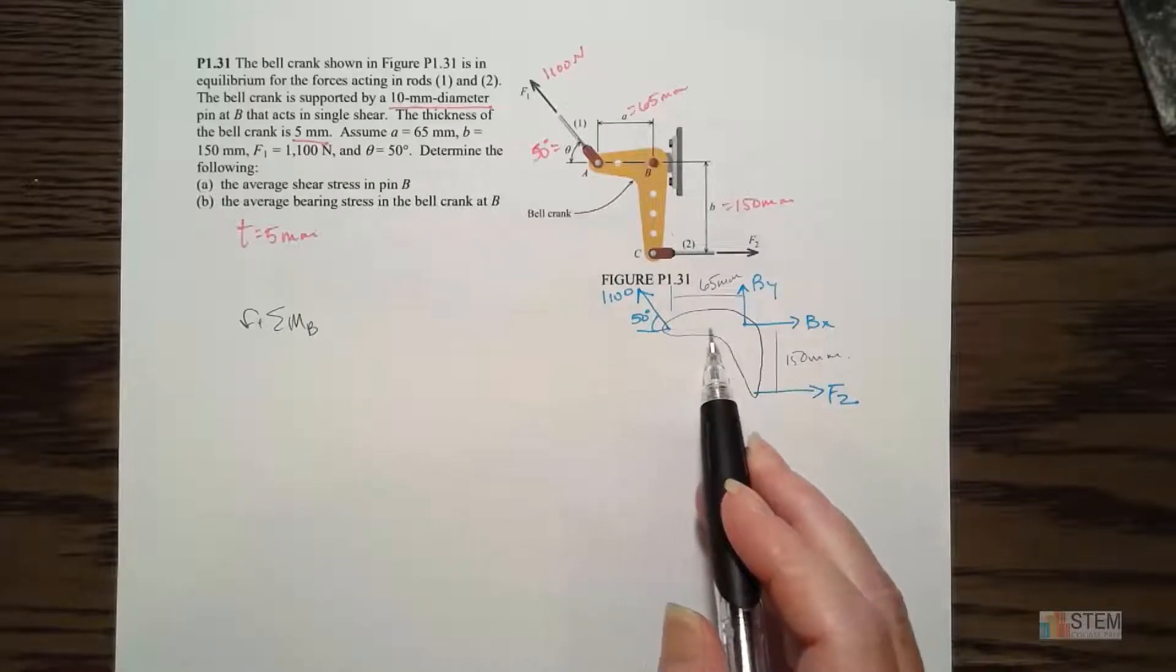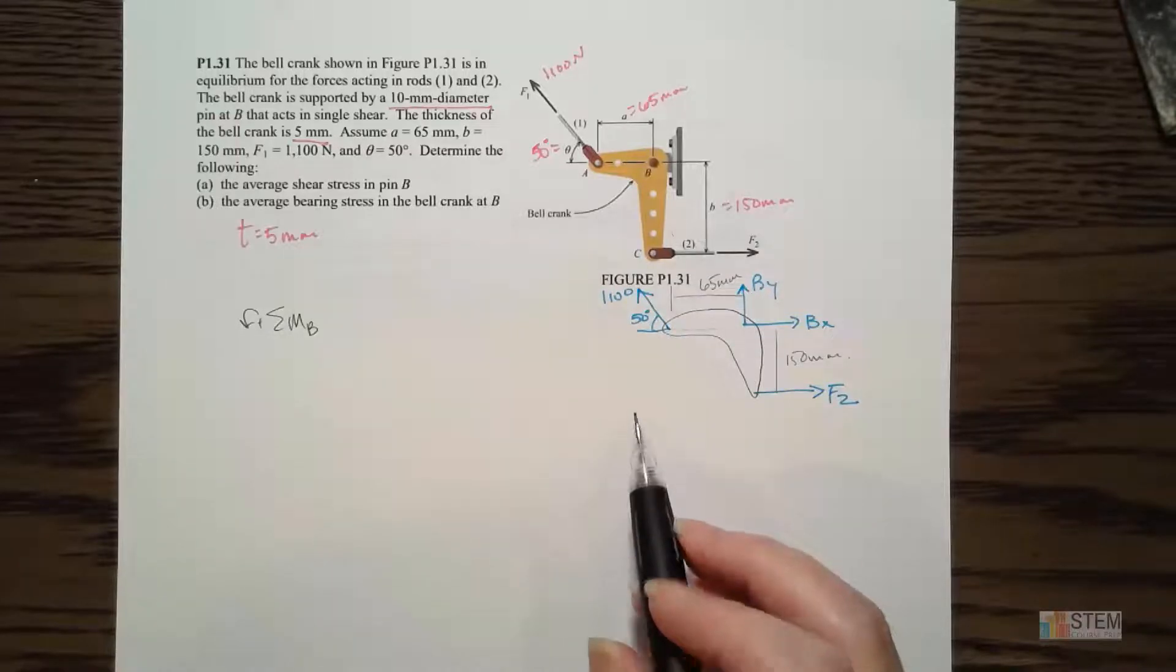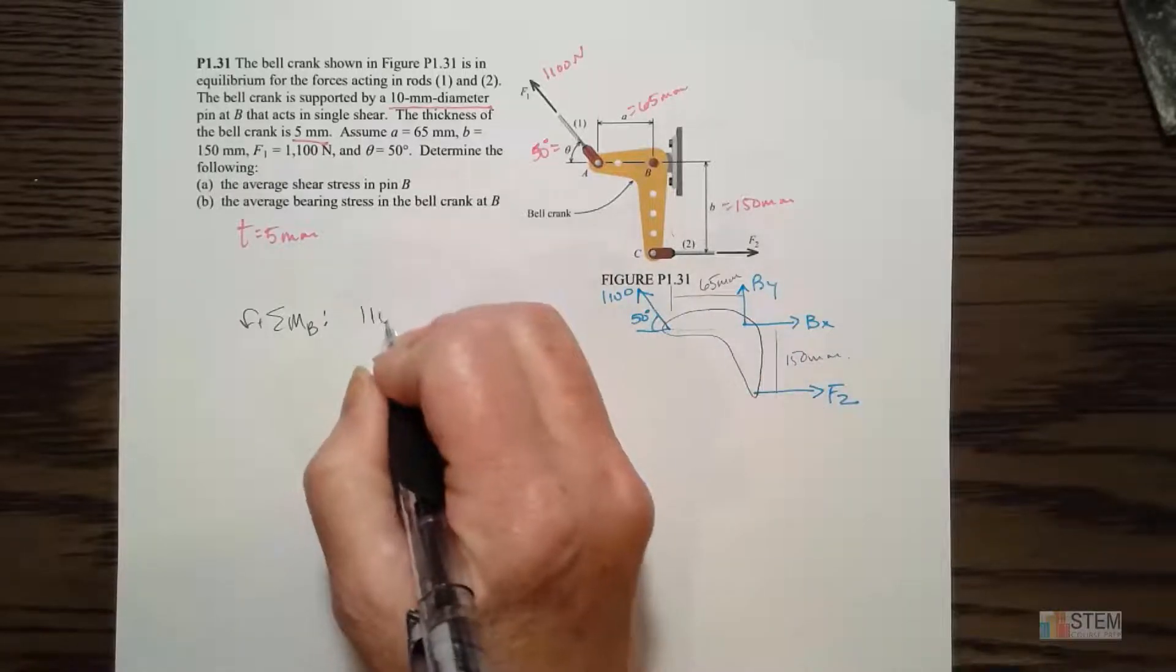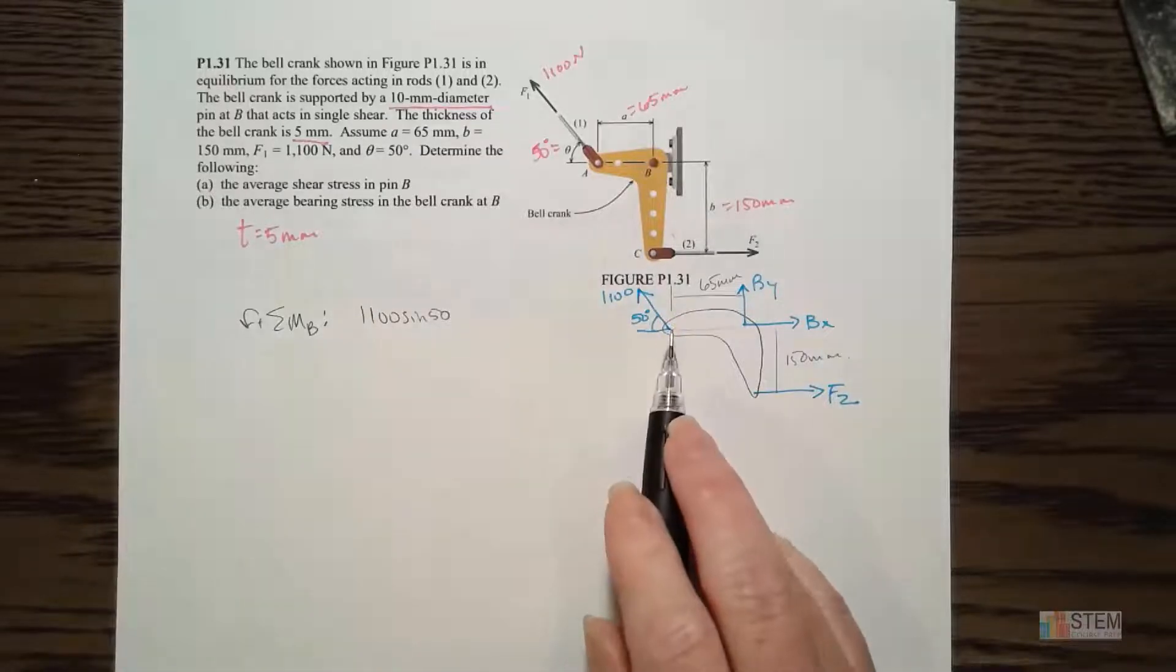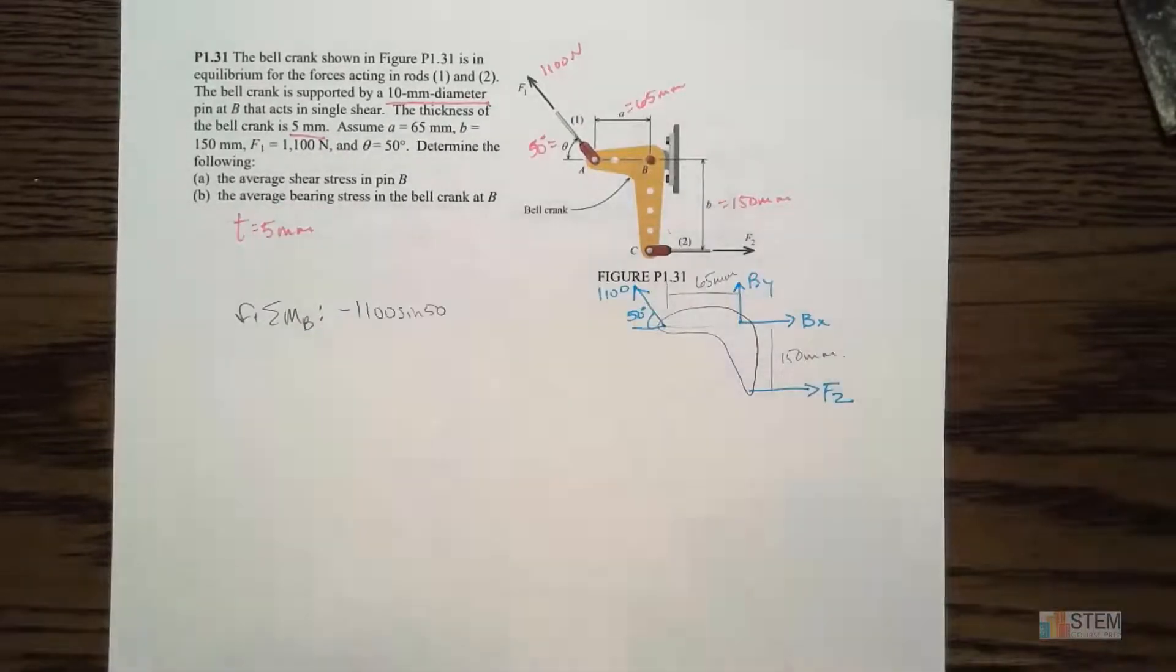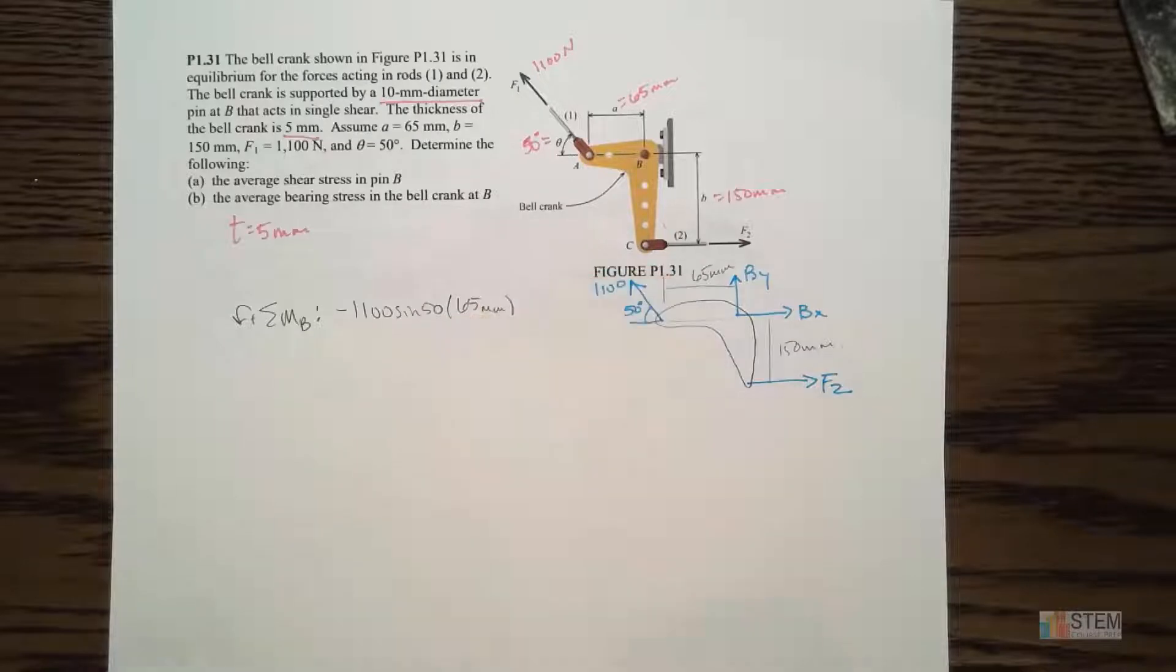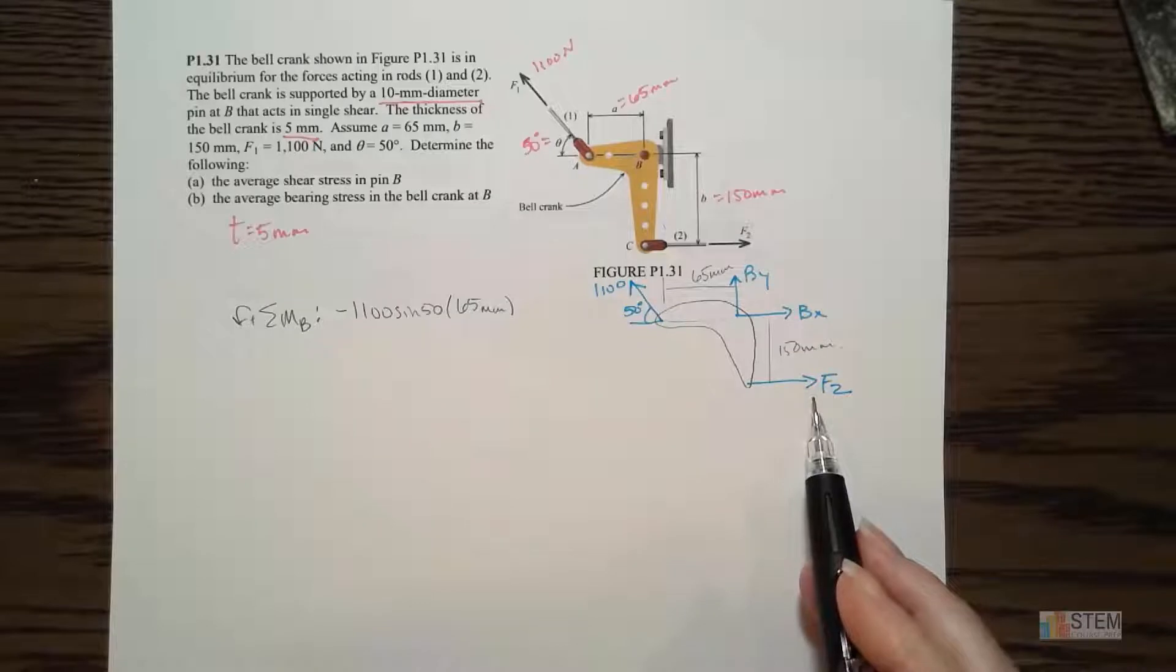Counterclockwise is going to be positive. And notice that A and B are on the same line here, so it's going to be important when we do this moment. Since these are on the same line, that means the X component of this force goes through B, so it doesn't create a moment. The vertical component does create a moment. So the vertical component is going to be 1100 sine 50.